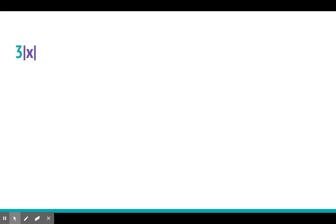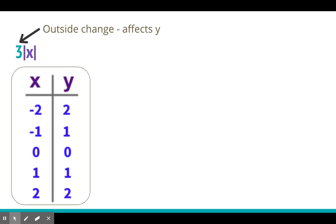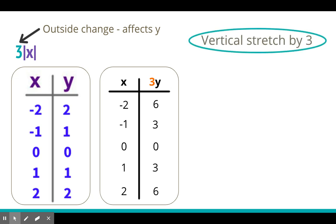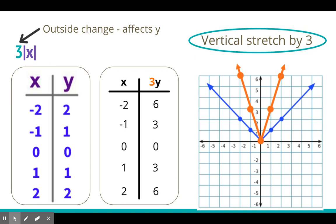For example, if we have 3 absolute value of x, the 3 is on the outside, so we remember that it changes and affects the y values. Here's our parent table for absolute value of x, and there's nothing going on on the inside, so the x's stay the same. But the y's are 3 times y: 3×2=6, 3×1=3, 3×0=0, 3×1=3, 3×2=6. This is a vertical stretch by 3, and if we plot the new transformed table on the graph, it looks like this — the graph was pulled and vertically stretched in the y direction; it's become narrower.